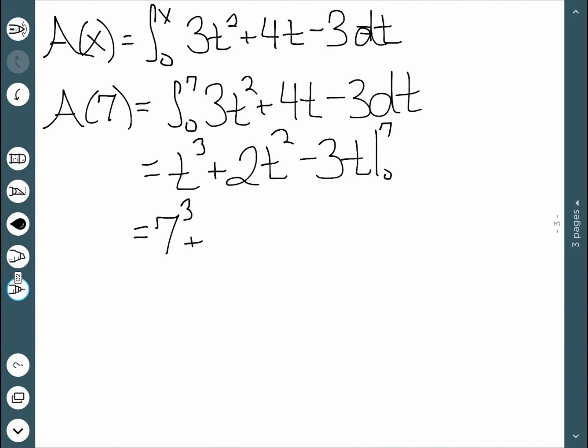So I have 7 cubed plus 2 times 7 squared minus 3 times 7 minus sticking in 0, which we can see from our last example is just going to be 0. When we work this one out, we get 420. So our area between 0 and 7 will be 420 units.